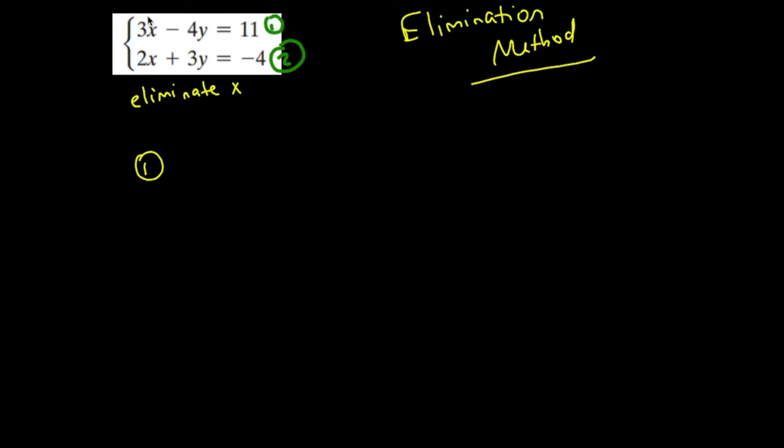That means that the coefficient in front of x has to be the same number but opposite signs. So what I'm going to do is I'm going to take equation 1 and multiply it by negative 2.